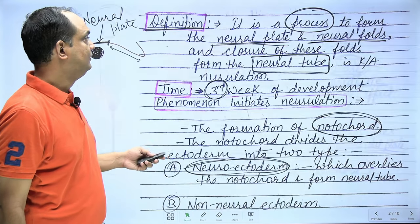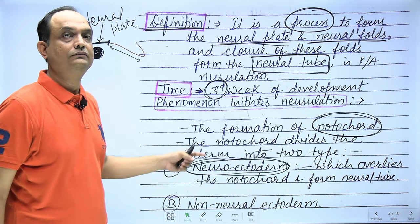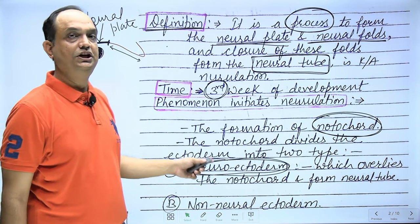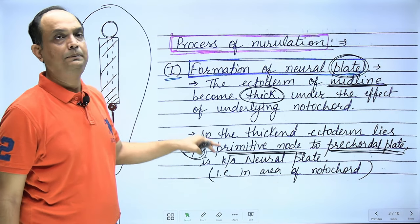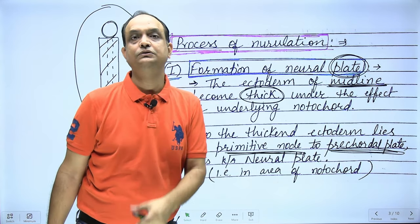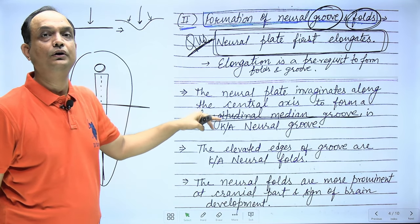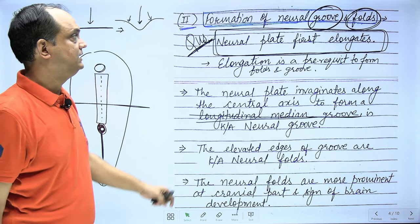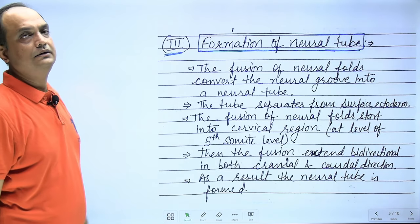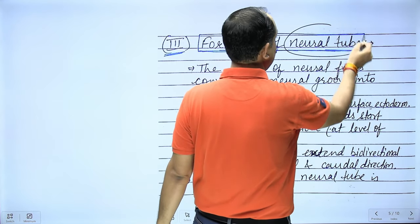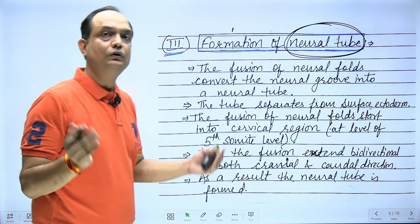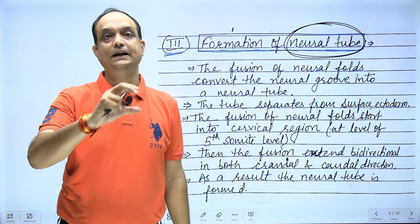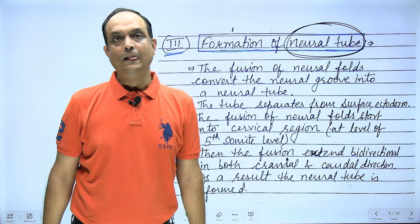To summarize so far: first there is formation of the notochord, and under its effect, the overlying ectoderm from the pre-chordal plate to the primitive node undergoes changes to become neuroectoderm. This neuroectodermal plate is the neural plate. It undergoes elongation, then there is formation of a longitudinal groove with two elevated edges — the neural folds. In the next step, the folds start to join each other, and fusion of the neural folds produces a pipe-like structure known as the neural tube.